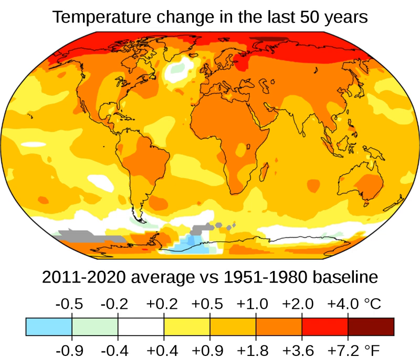A wide range of policies, regulations, and laws are being used to reduce emissions. As of 2019, carbon pricing covers about 20% of global greenhouse gas emissions. Carbon can be priced with carbon taxes and emissions trading systems. Direct global fossil fuel subsidies reached $319 billion in 2017 and $5.2 trillion when indirect costs such as air pollution are priced in. Ending these could cause a 28% reduction in global carbon emissions and a 46% reduction in air pollution deaths. Subsidies could be used to support the transition to clean energy instead. More direct methods to reduce greenhouse gases include vehicle efficiency standards, renewable fuel standards, and air pollution regulations on heavy industry. Several countries require utilities to increase the share of renewables in power production.